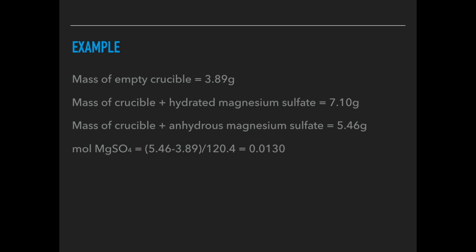The moles of magnesium sulphate is the 5.46, the anhydrous value minus that empty crucible over the MR of MgSO4. That came out at 0.0130 moles. The moles of water, you work the difference out between these two numbers because that takes into account the crucible as well, and we get 0.0911. The ratio of magnesium sulphate to water is 1 to 7, and so there's the formula.